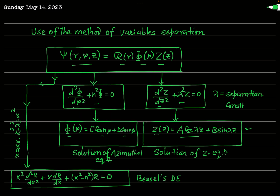The radial part of the equation, in terms of R(r), gets transformed into a very famous second-order ordinary differential equation with variable coefficients — known as Bessel's equation — after making two substitutions: introducing a new variable x equal to alpha·r, and substituting k² minus lambda² equal to alpha-squared.